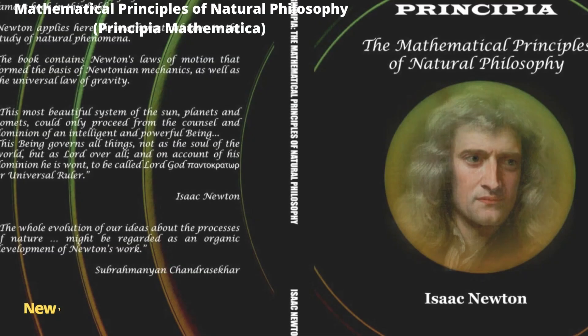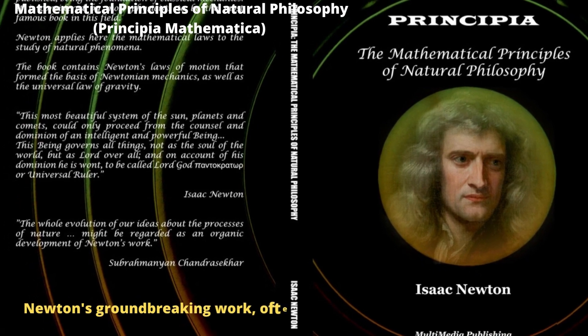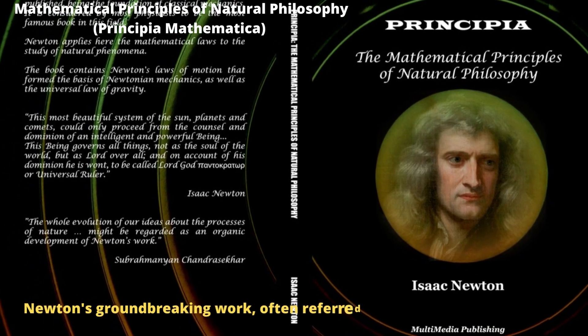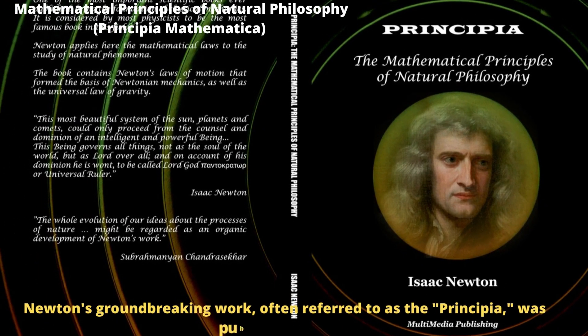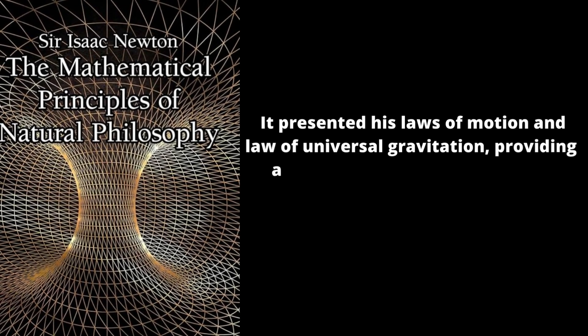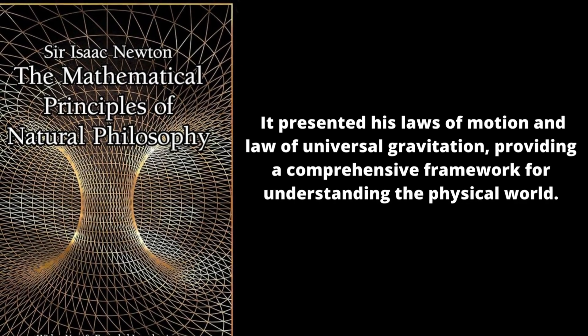Mathematical Principles of Natural Philosophy — Principia Mathematica. Newton's groundbreaking work, often referred to as the Principia, was published in 1687. It presented his laws of motion and law of universal gravitation, providing a comprehensive framework for understanding the physical world.